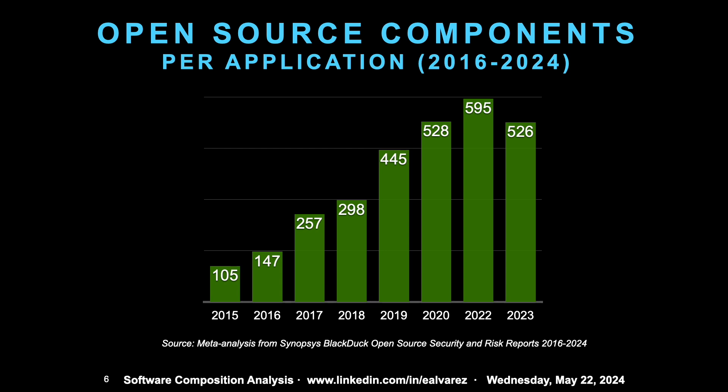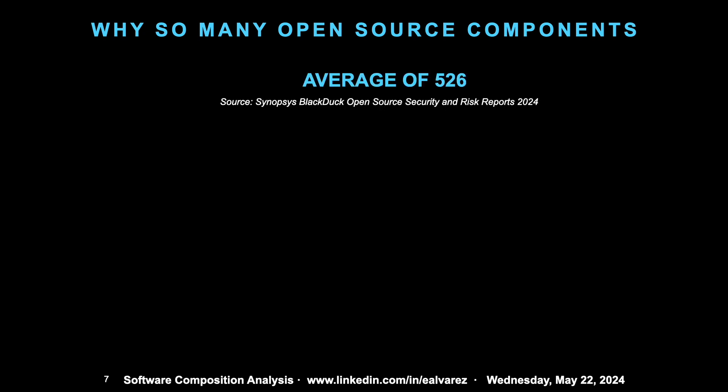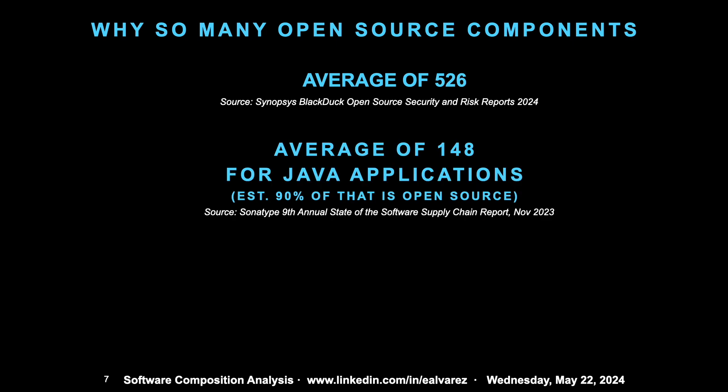So how much open source is in your projects? We have here a meta-analysis from the Synopsys Black Duck Security and Risk Report. This is data from 2015 all the way to 2023, and we see during this time frame a very large increase in the average number of components, with only a small dip in the last year of the surveys. With an average of 526, you can cross-reference with other data sources — in this case, the Sonatype 9th Annual State of the Supply Chain Report from 2023.